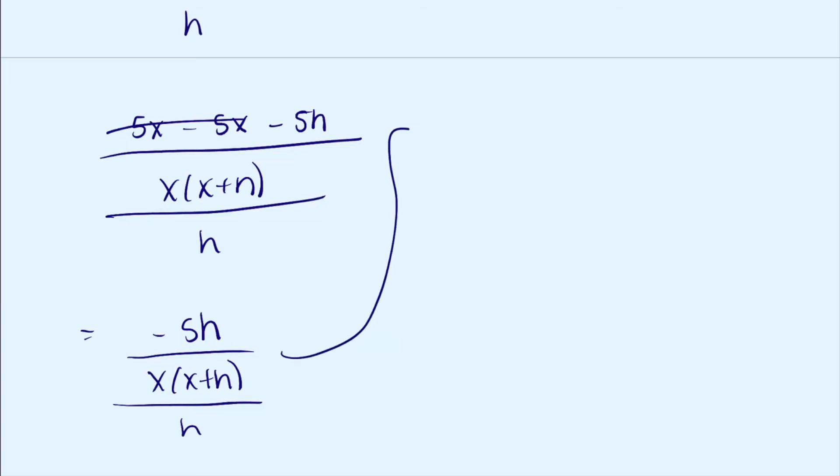Negative 5h over x times x plus h, times 1 over h. We can cancel out these h's, and we're left with negative 5 over x times x plus h.